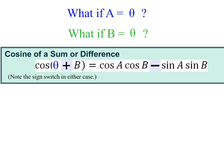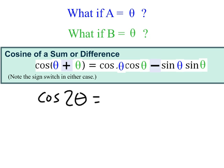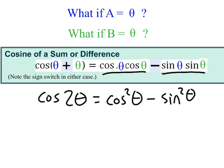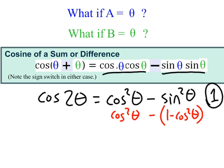Same with the cosine version. If we do the same thing and replace all the a's with theta and all the b's with theta as well, we get the cosine version. This one has several different variations. We get cosine of two theta on one side, and on the right side we get cosine squared of theta minus sine squared of theta — that is one valid variation. But we can also use our Pythagorean identities and replace the sine squared with one minus cosine squared. If we distribute the negative sign and combine like terms, that gives us two cosine squared of theta minus one.